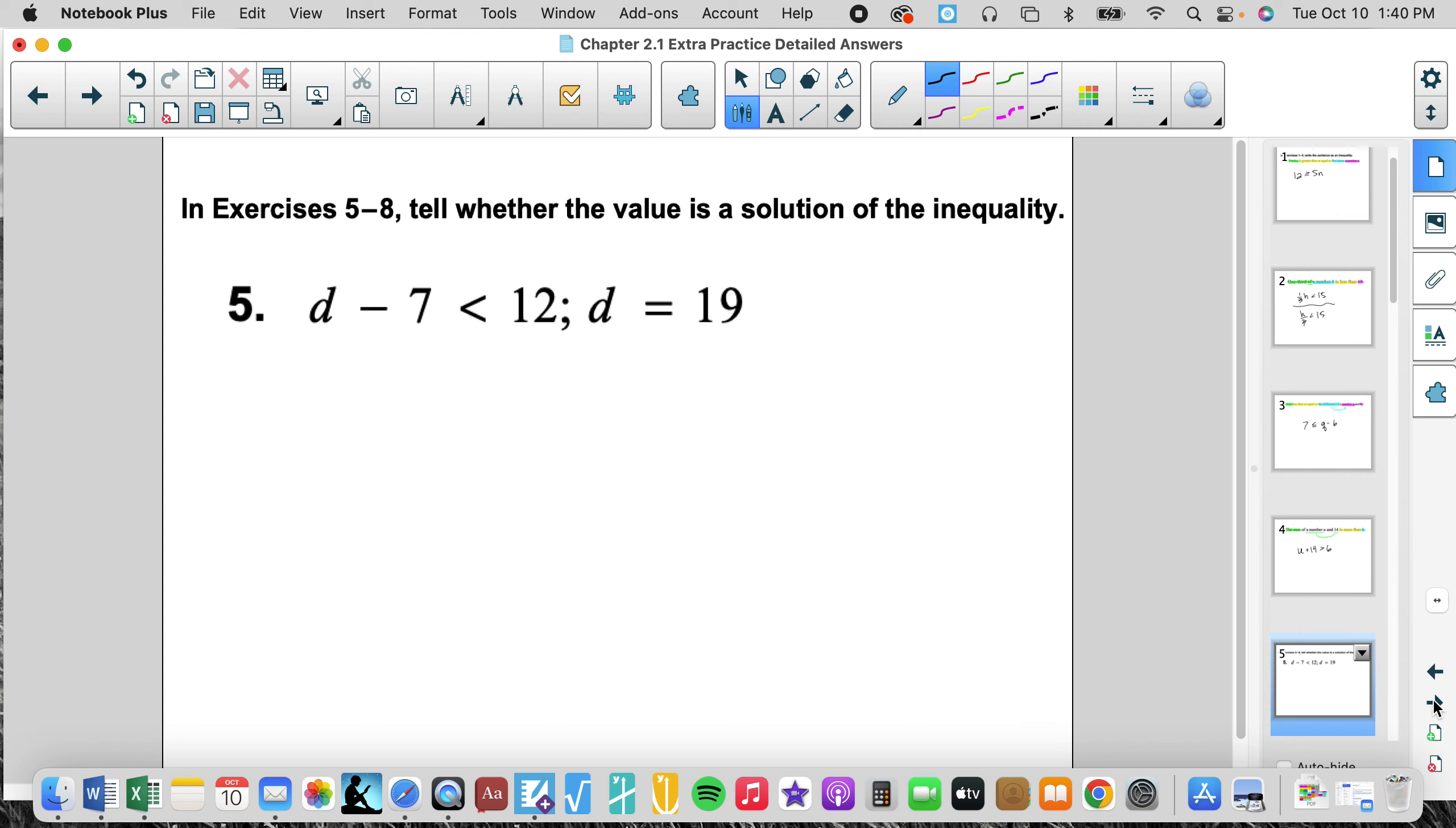Tell whether the value is a solution of the inequality. So we're going to plug in 19 for d. We're going to substitute the value 19 in for d, subtract it from 7 and see if it's less than 12. 19 minus 7 is 12. And is 12 less than 12? No it is not. So that is false, not a solution. So 19 is not a solution to that inequality.